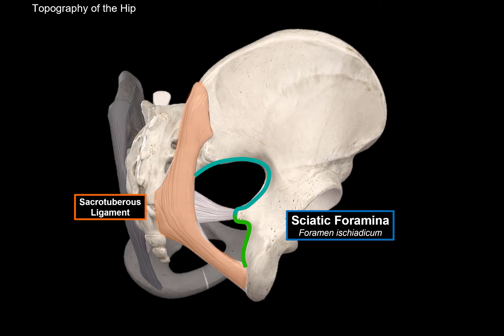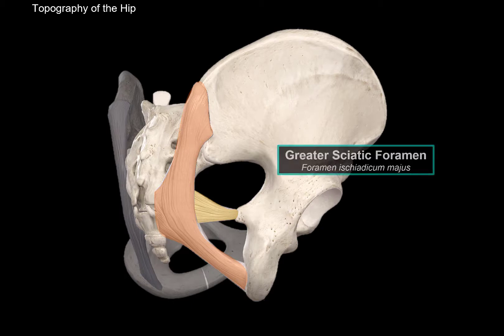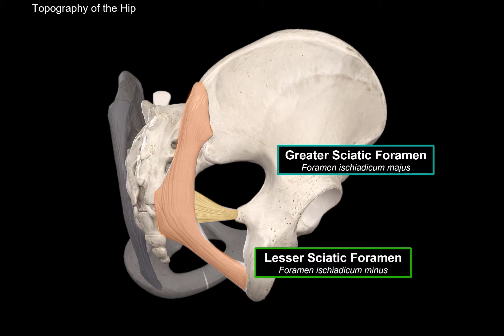The first ligament is more superficially located — the sacrotuberous ligament, which mainly connects the sacrum to the ischial tuberosity. The other is the sacrospinous ligament, which attaches to the sacrum posteriorly and to the ischial spine anteriorly. These ligaments help create two openings. The first is more superiorly located and larger: the greater sciatic foramen. The other is inferiorly placed and smaller: the lesser sciatic foramen.